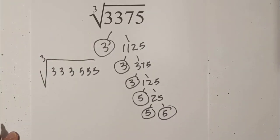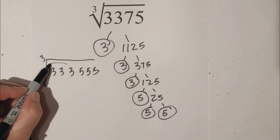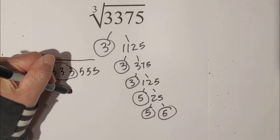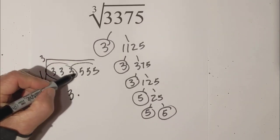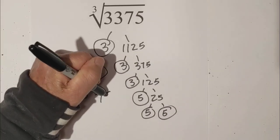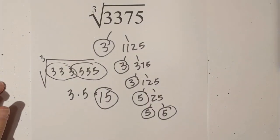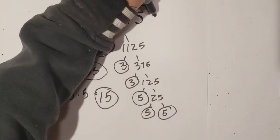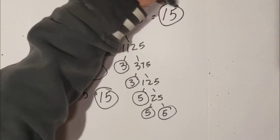What you can do is pull out groups of 3, so we'll pull out this group of 3s, and let's pull out this group of 5s. So we have 3 times 5, which is 15. So the cube root of 3,375 is 15.